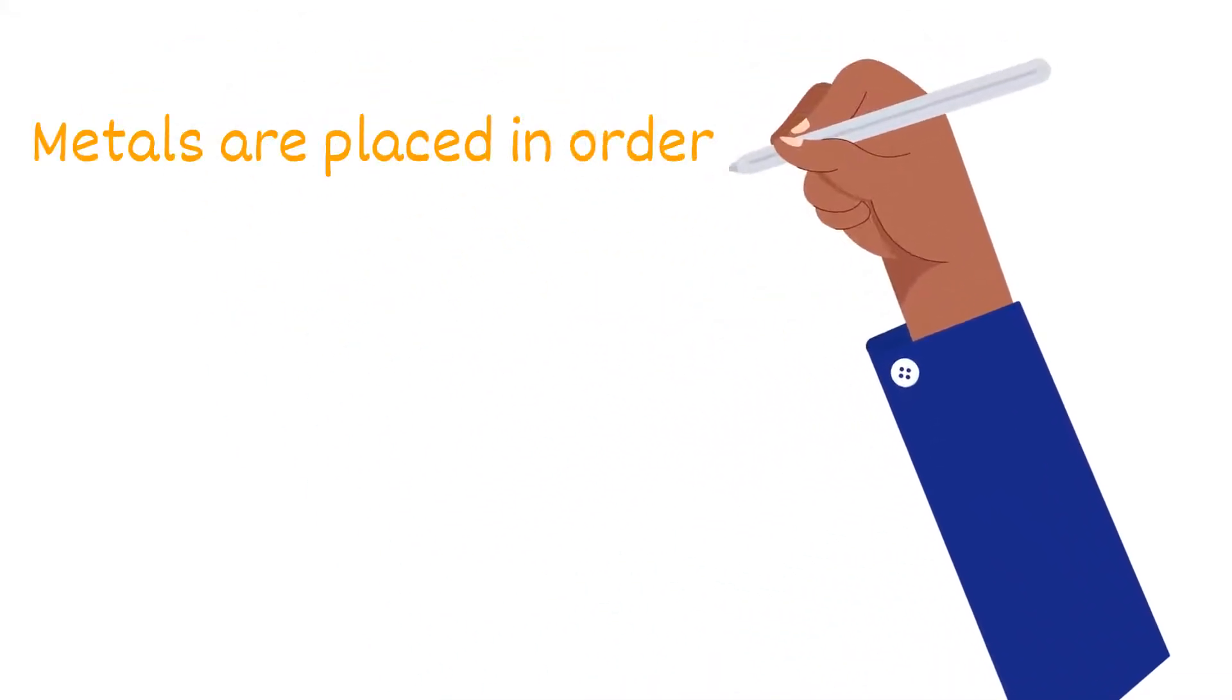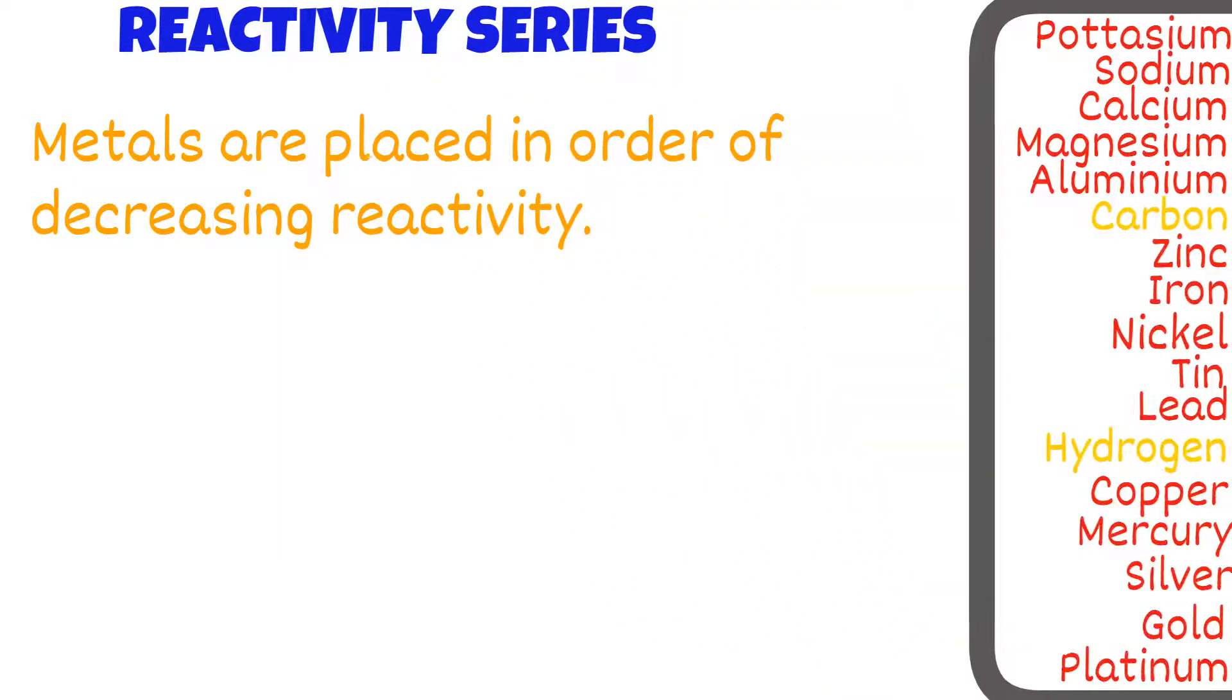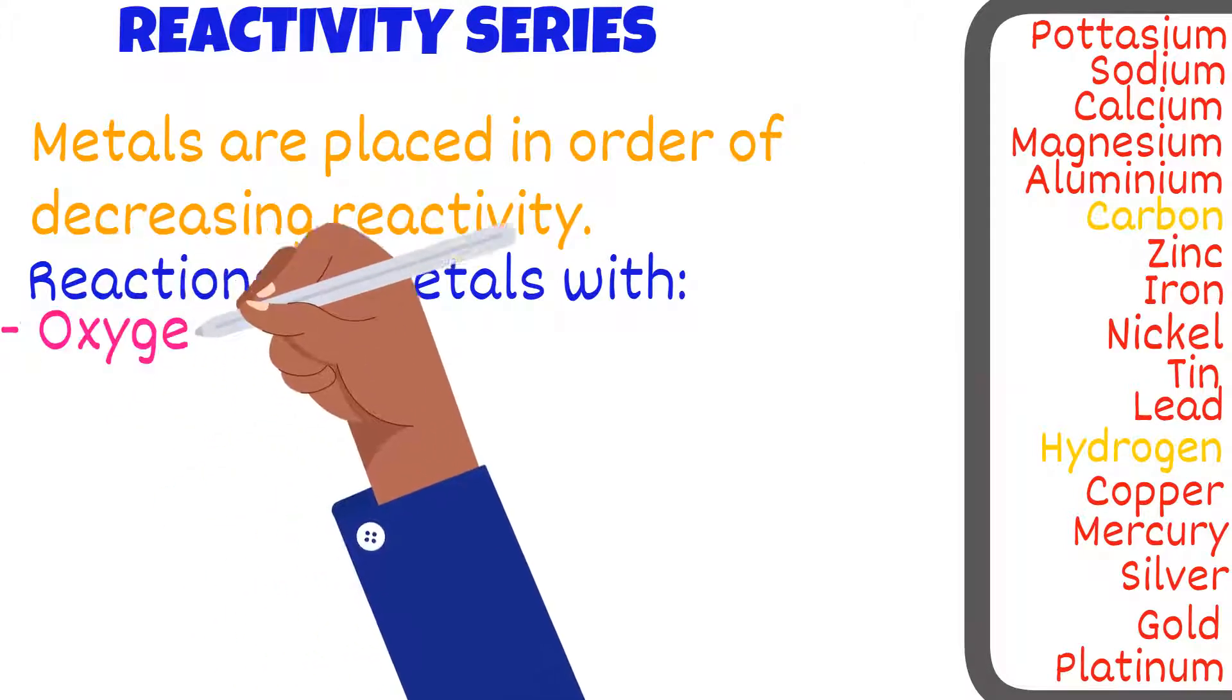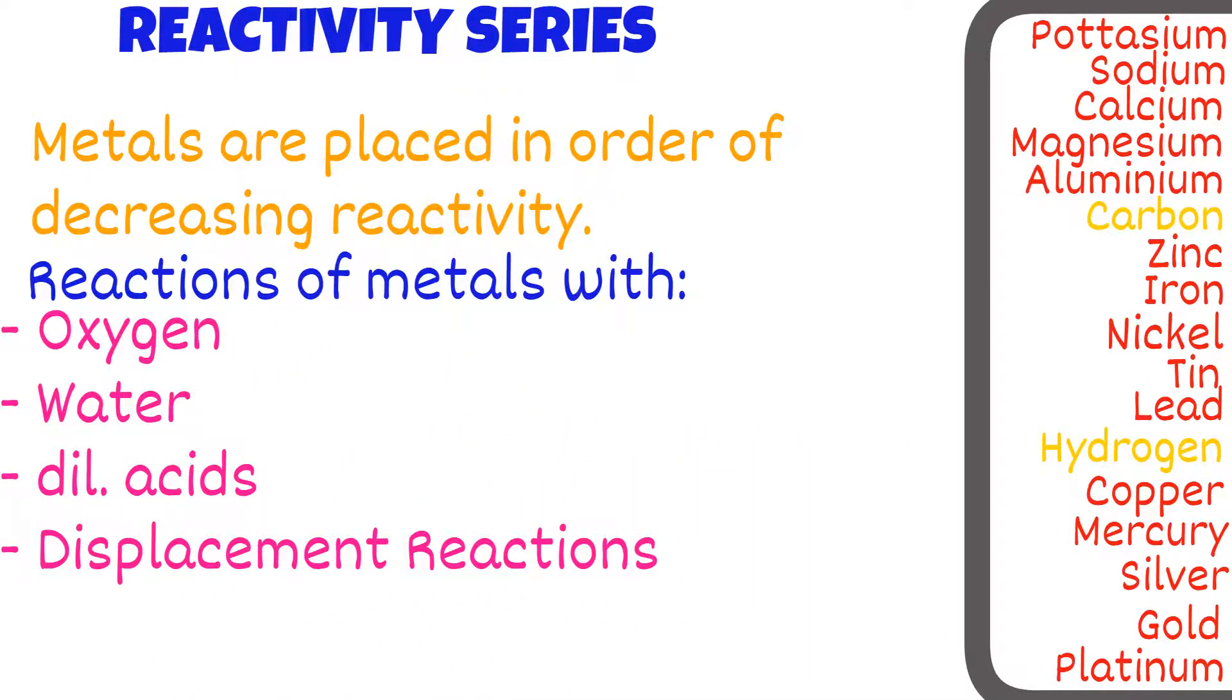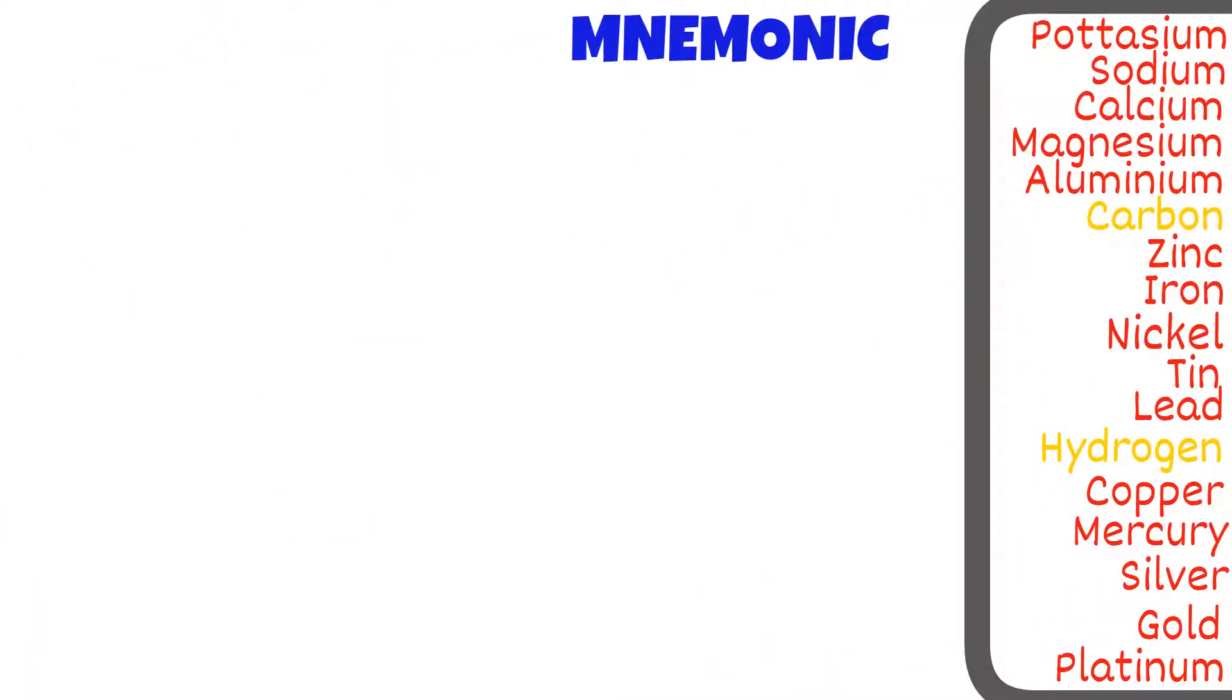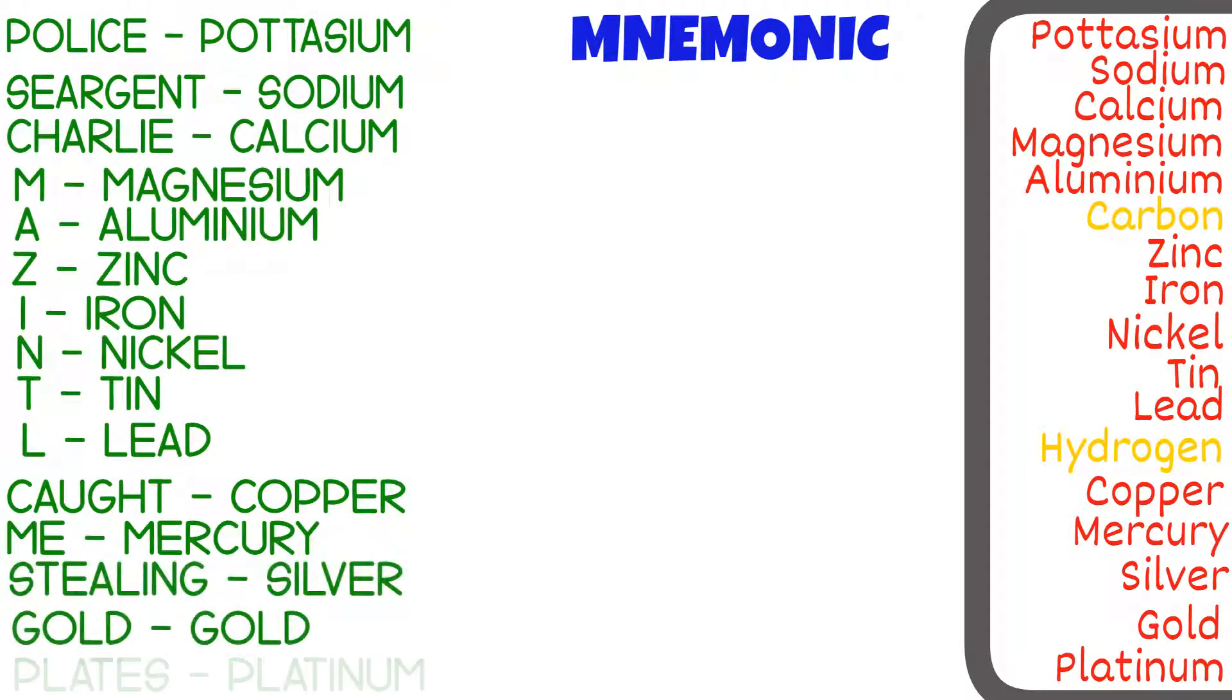Metals are placed in the order of decreasing reactivity in the reactivity series as shown on the screen. This is based on the reaction of metals with oxygen, water, dilute acids, and displacement reactions. An easy way to remember the order of the series is using a mnemonic: Police Sergeant Charlie Mezzenter Caught Me Stealing Gold Plates.